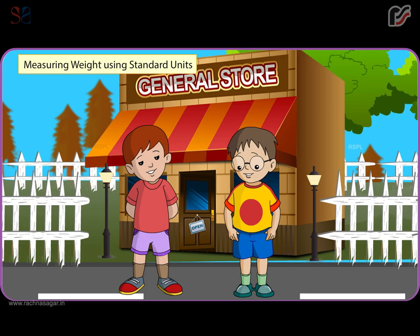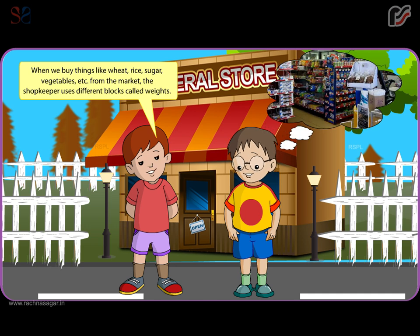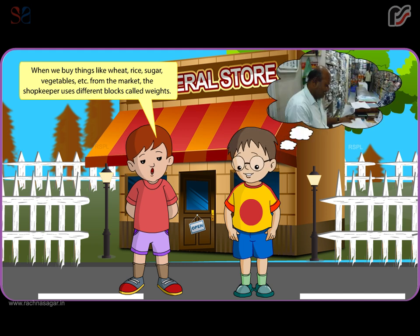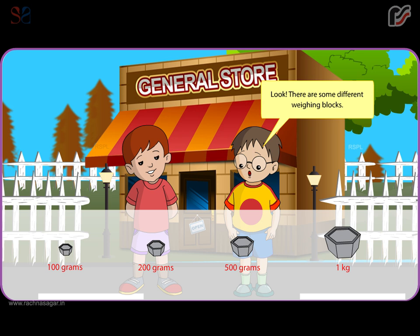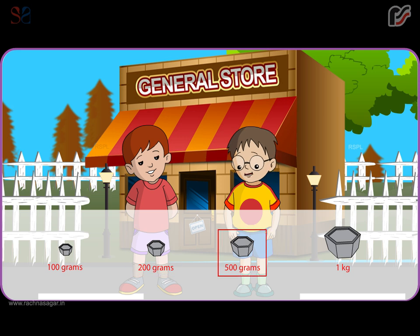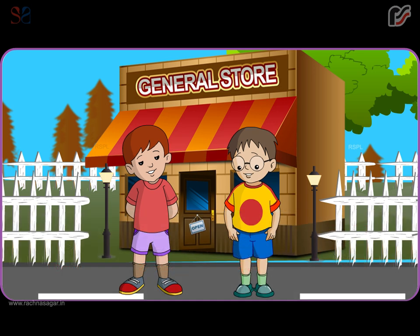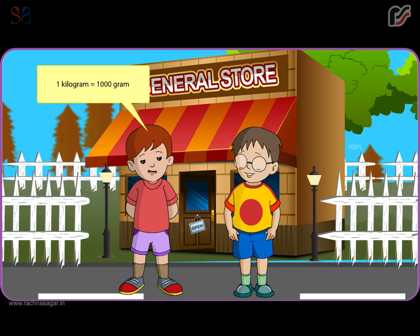Measuring weight using standard units. When we buy things like wheat, rice, sugar, vegetables, etc. from the market, the shopkeeper uses different blocks called weights. There are some different weighing blocks: 100 grams, 200 grams, 500 grams, 1 kg. Kilogram and gram are the standard units of weight, and 1 kg is equal to 1000 grams.